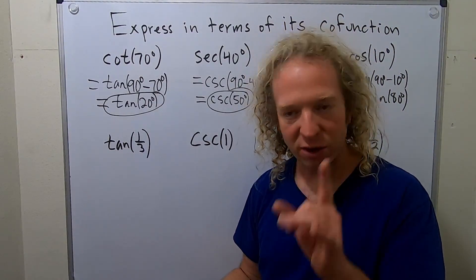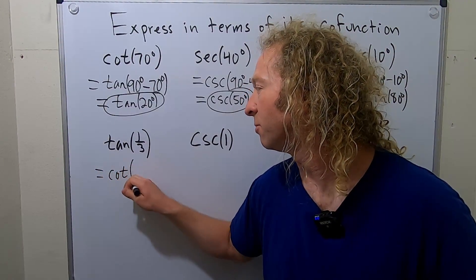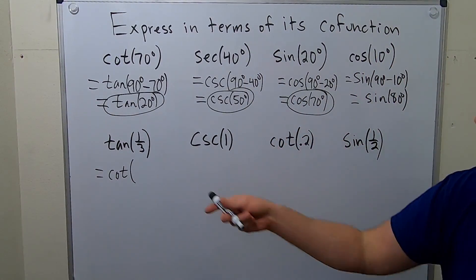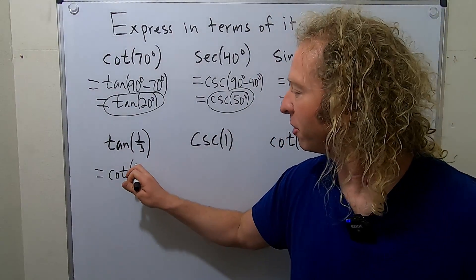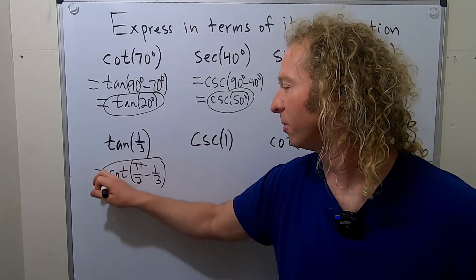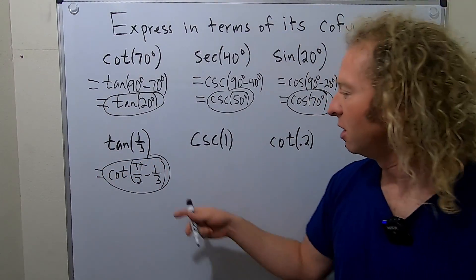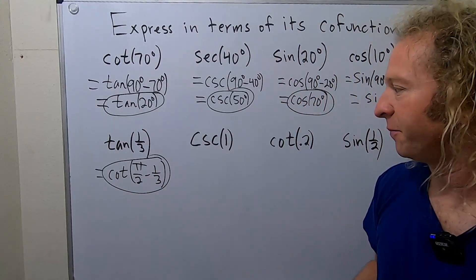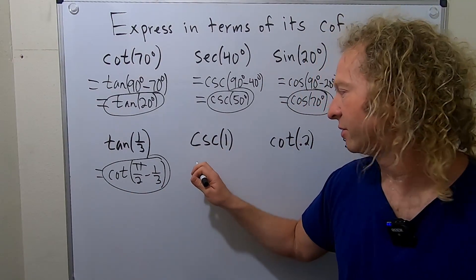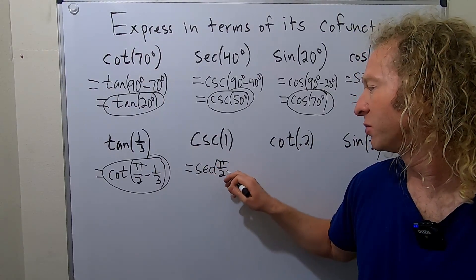Tangent — we know its co-function is cotangent. This time there's no degree symbol, so we have to assume these are in radians. So instead of 90, we use pi over 2. This will be cotangent of pi over 2 minus 1 third — you can just stop there, most people are okay with that. This next one's co-function is secant, so it's equal to secant of pi over 2 minus 1.